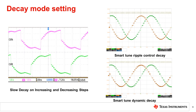The smart tune dynamic decay, or ripple control decay, attempts to operate mostly in slow decay, with inserting periods of fast decay or extending the PWM off time to maintain the ideal waveform if the current runs away. Therefore, a smart tune decay mode, which can follow the ideal waveform at all conditions, is the ideal candidate for reducing audible noise from stepper motors.